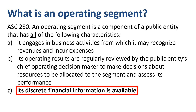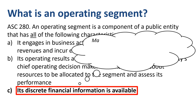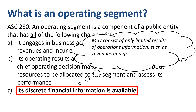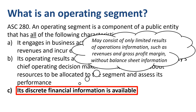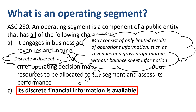Discrete financial information may consist of only limited results of operations information, such as revenues and gross profit margin, without balance sheet information. And for the non-native speakers of English, 'discrete' is not the same as 'discreet.' The former means individually separate and distinct, while the latter means careful and prudent in one's speech or actions, especially in order to keep something confidential or to avoid embarrassment.